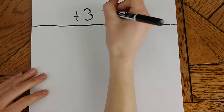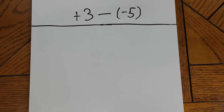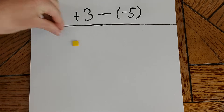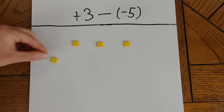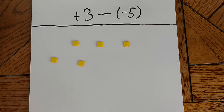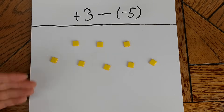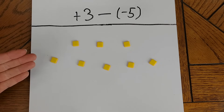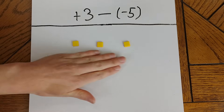Now let's say I want to subtract negative 5. We're going to start out the same way by bringing in positive 3 yellow unit tiles. Now we know that subtracting a negative is the same as adding a positive, so we could just add in five yellow unit tiles and call it good. But we can also use the tiles to actually show why subtracting a negative is the same as adding a positive. Let me show you.